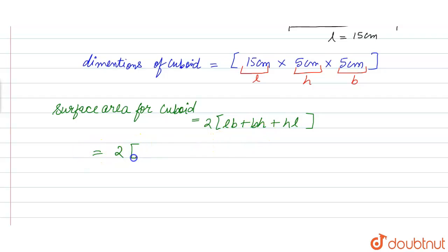We have 2 into length 15 cm into breadth 5 cm, plus breadth 5 cm into height 5 cm, plus height 5 cm into length 15 cm, in cm square.